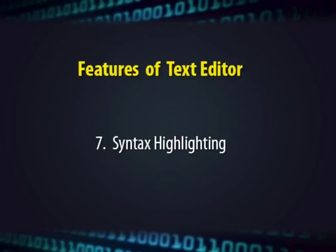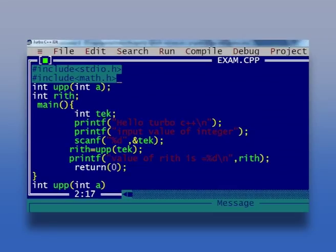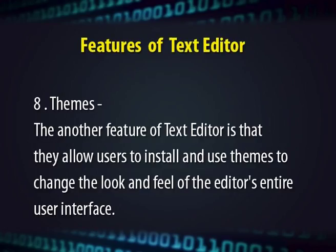The next feature of text editors or word processors is syntax highlighting. The contextual highlighting highlights various words of a source code, markup languages, config files, or other text that appears in an organized or predictable format. Editors generally allow users to customize the colors or style used for each language element. Text editors also allow users to install and use themes to change the look and feel of the editor's entire user interface.